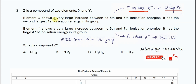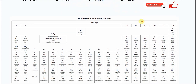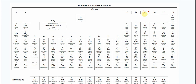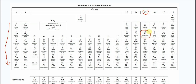Element X has the second largest first ionization energy in its group, so we need to refer to the periodic table. For Group 15, the largest first IE is nitrogen, because ionization energy decreases down the group. So the largest IE in Group 15 is nitrogen, and therefore element X is not nitrogen — it is phosphorus, because phosphorus has the second largest first IE in this group.